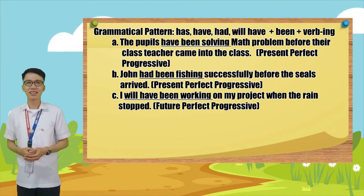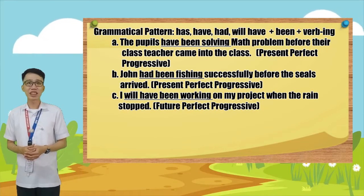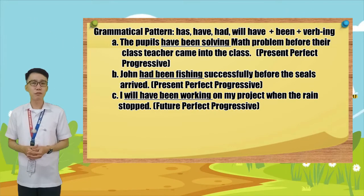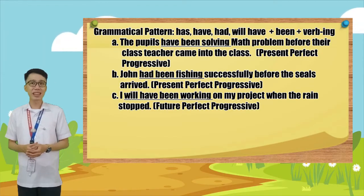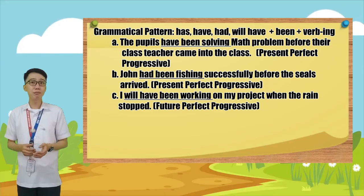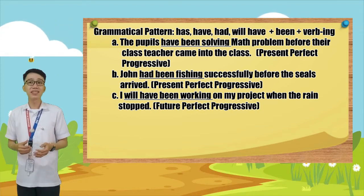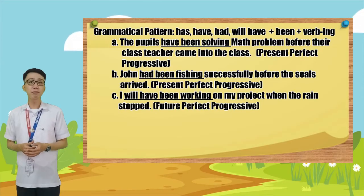Letter A: 'The pupils have been solving a math problem before their class teacher came into the class.' 'Have been solving' is in present perfect progressive. Letter B: 'John had been fishing successfully before the seals arrived.' 'Had been fishing' is in past perfect progressive. Letter C: 'I will have been working on my project when the rain stopped.' 'Will have been working' is in future perfect progressive.